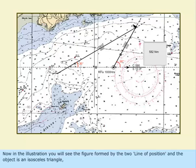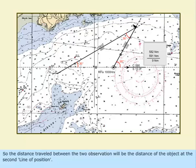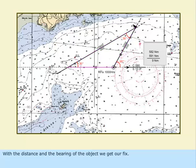Now in the illustration, you will see the figure formed by the two line of position and the object is an isosceles triangle. So, the distance traveled between the two observations will be the distance of the object at the second line of position. With the distance in the bearing of the object, we get our fix.